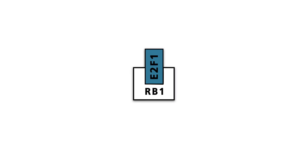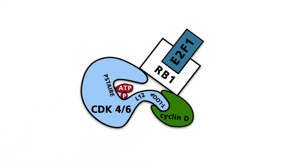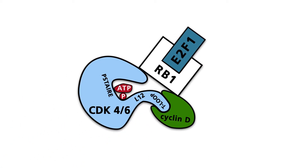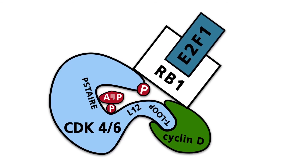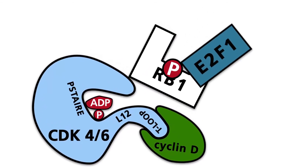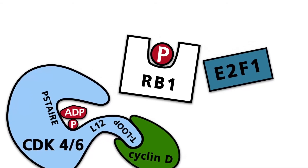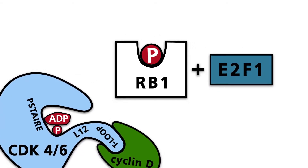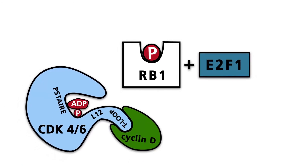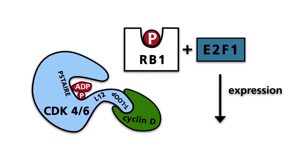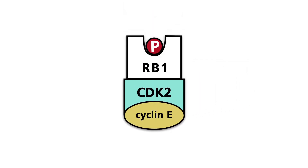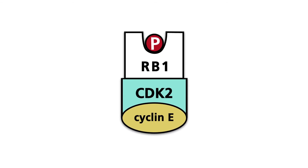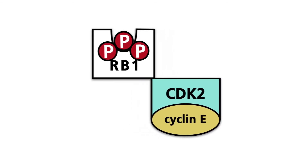During the G1 phase, RB1 is partially phosphorylated by CDK4 and CDK6. In many tumors, both CDKs are overexpressed due to gene amplification. Partial phosphorylation of RB1 by CDK4 and CDK6 leads to the dissociation and activation of E2F1. E2F1 activates the expression of cyclin E and other genes. Cyclin E then activates CDK2, which phosphorylates RB1. Hyperphosphorylated RB1 is able to induce genes to initiate DNA replication, thereby starting the S phase.